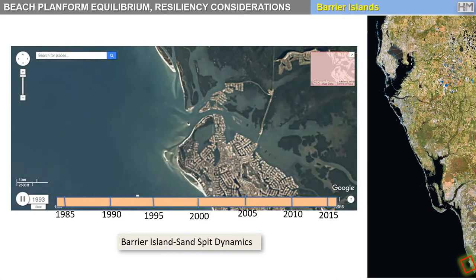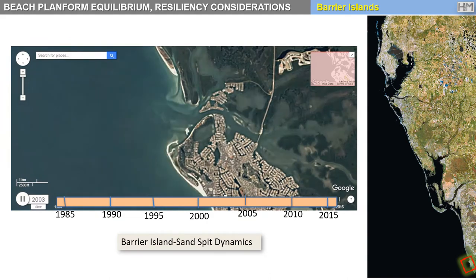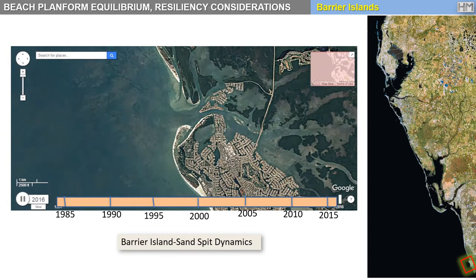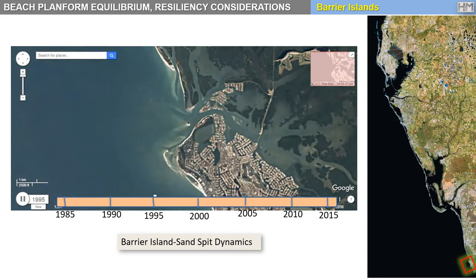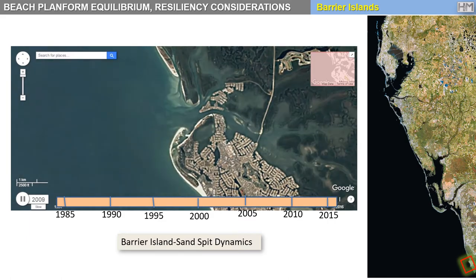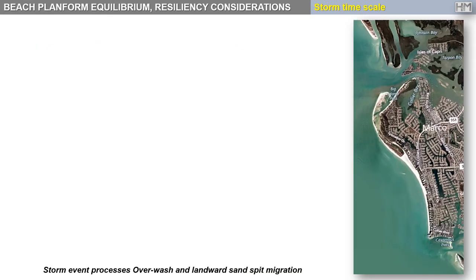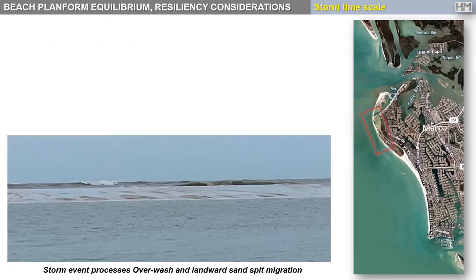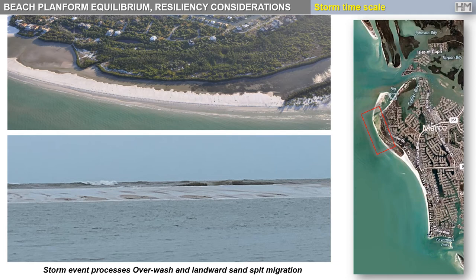To answer this question, we look at a few examples in southwest Florida and barrier islands, including this case here, where we see a time lapse of over 30 years of evolution at the north end of Marco Island. If we focus on that part of the island and look at the processes at the storm time scale, we notice the dynamics of surge and waves overtopping the sand spit, causing overwash and landward migration of the sand spit.